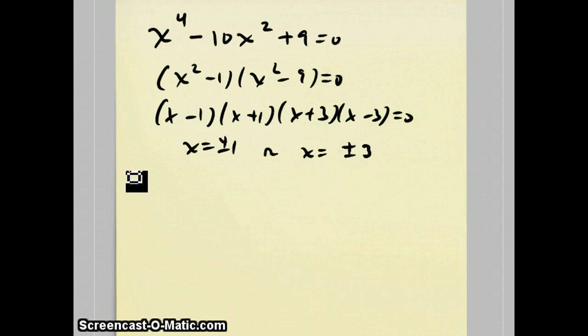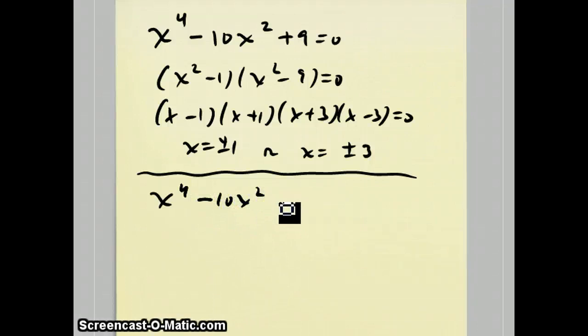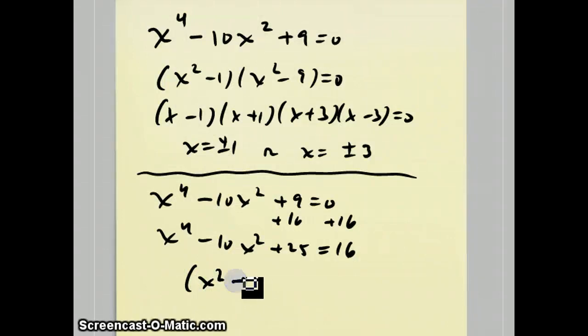We could do the same question another way. Imagine we started with the same question again. Instead of factoring it, we add 16 to both sides of the equation. This is the completing the square process, and it's a little bit more general. Take a look at what happened here. The left side is now a perfect square, so it's (x^2 - 5)^2 = 16.